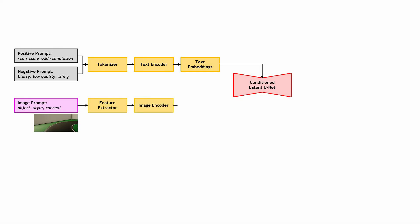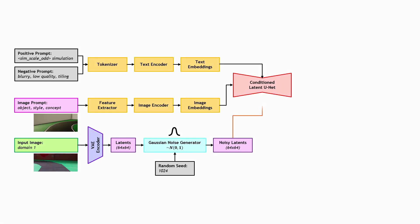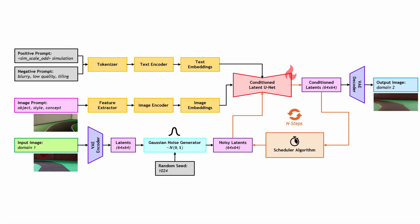There is also an option to incorporate a prompt image to serve as an example of the source domain, and a negative text prompt to condition the model to control output image quality by avoiding effects such as blurring, smudging, or tiling. The output image is an adapted representation of the target domain, such as real-world, as mapped to the source domain, like simulation, which is more familiar or comfortable for the autonomy algorithm.